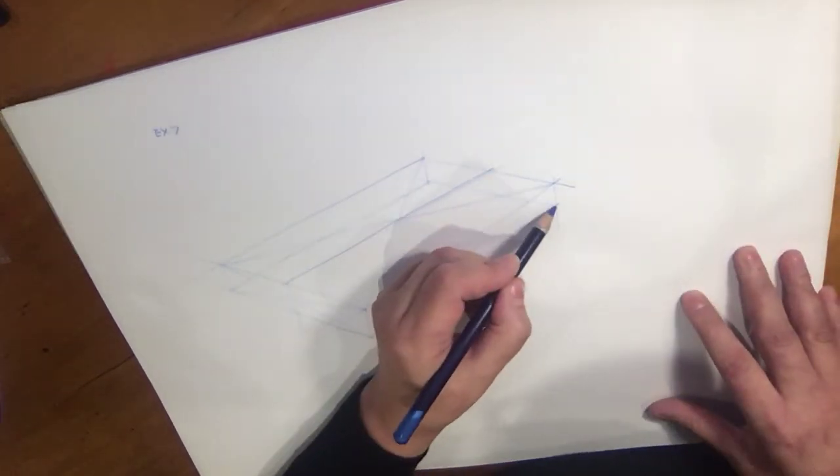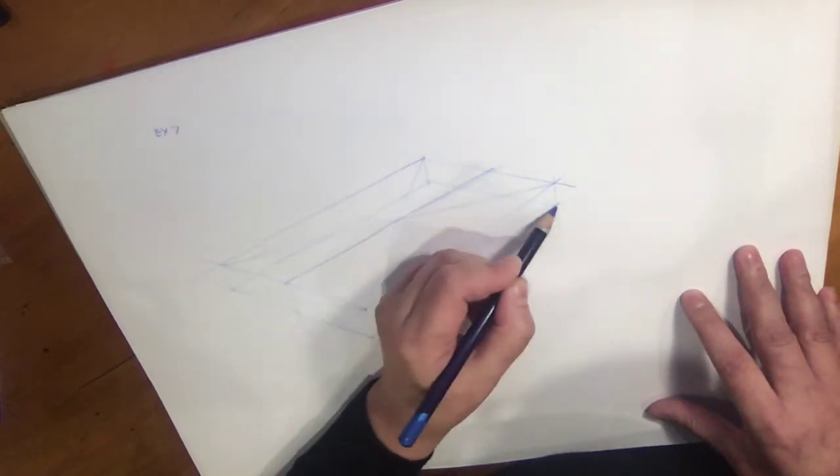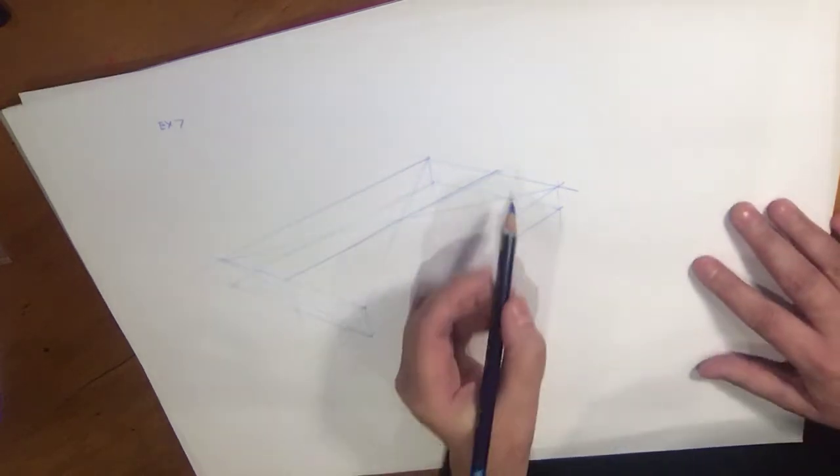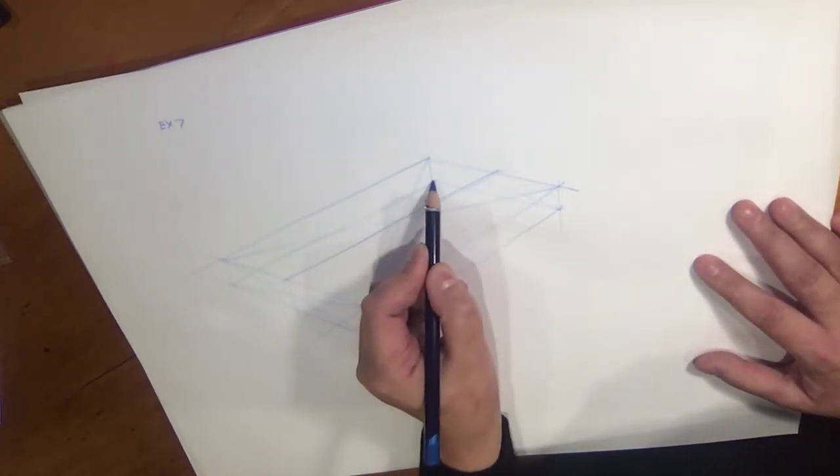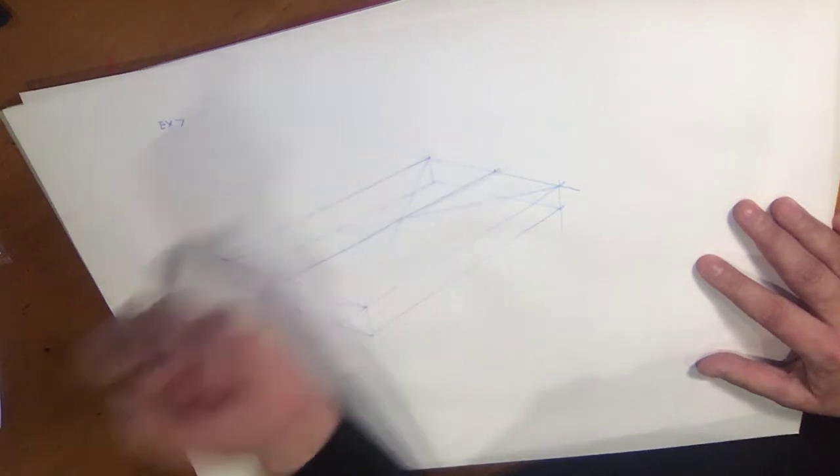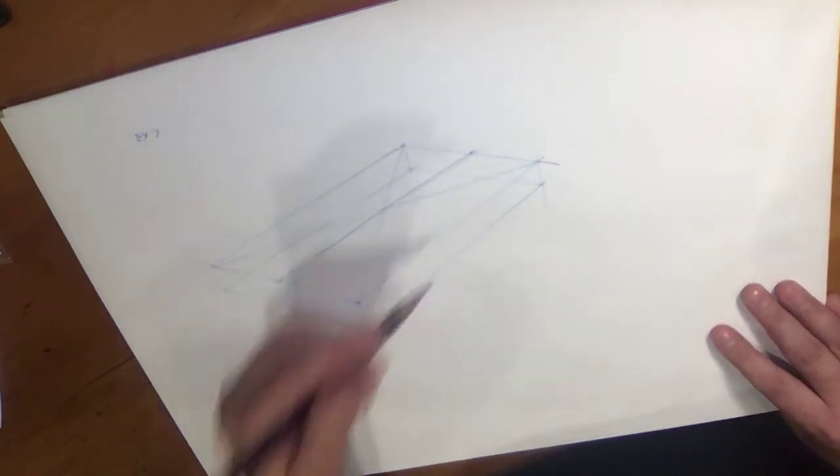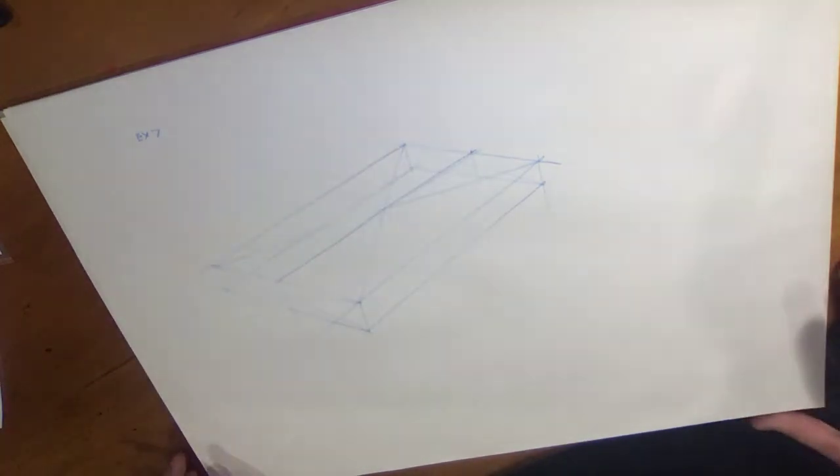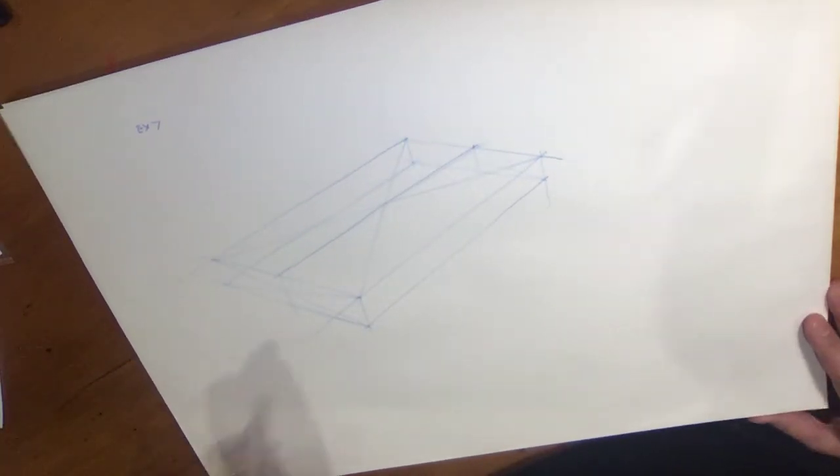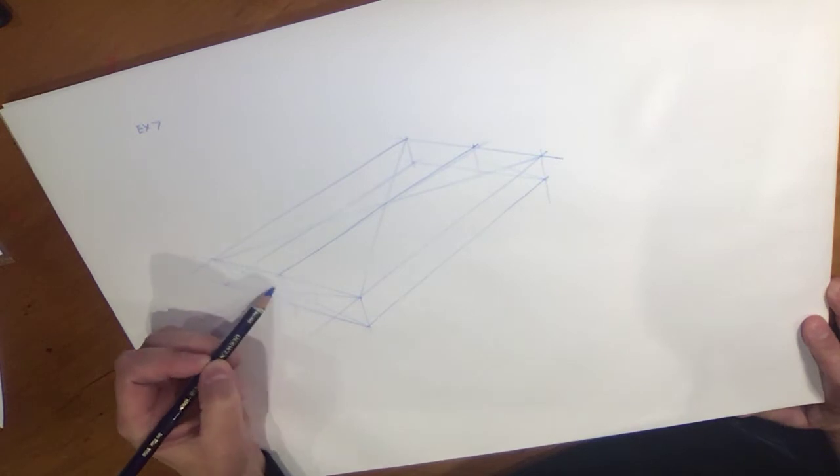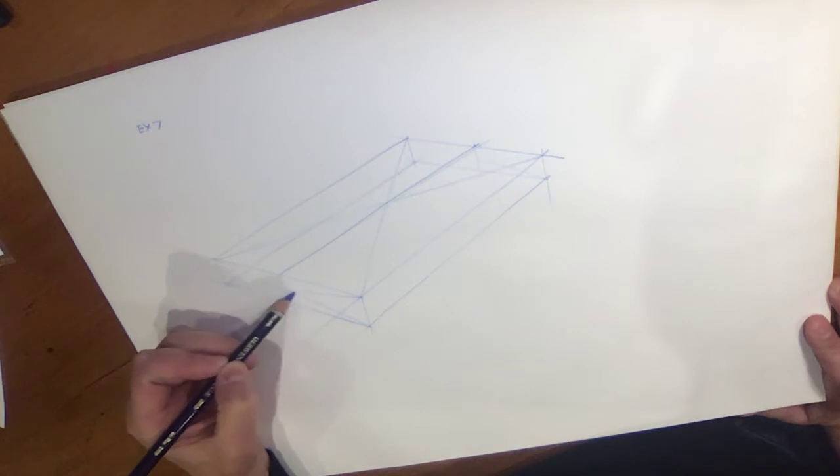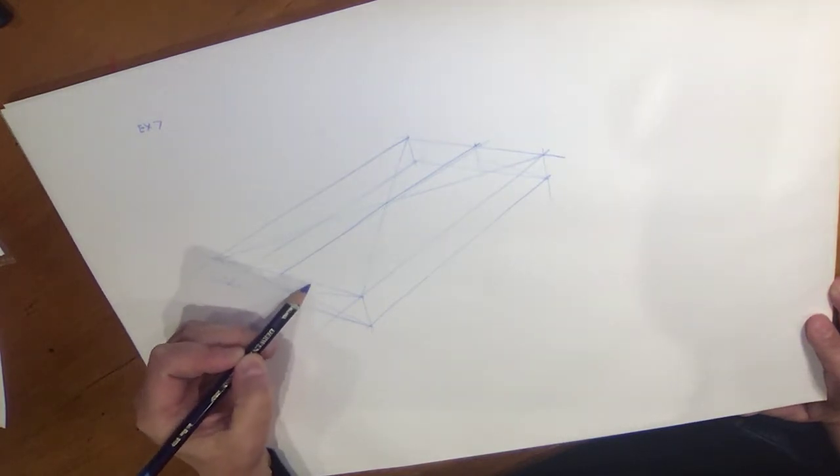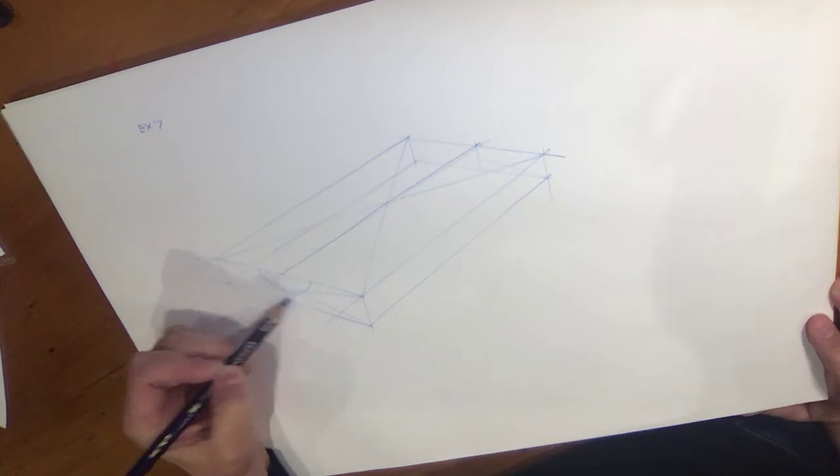And you can also do some diagonals down the back here if you think that would help you. However, wherever that point is there, we can actually drop a vertical line and that will locate the midpoint. Also, to begin with, I'm going to start by locating an ellipse down the bottom here, or a wave like so.